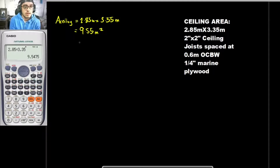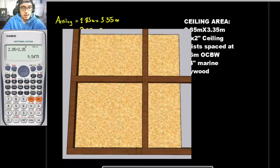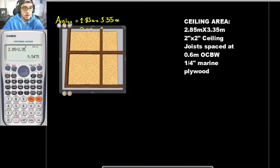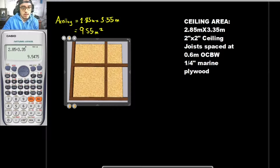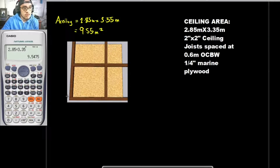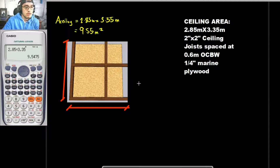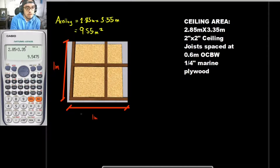Now that we have the ceiling area, the next thing we need to do is get the factor for the ceiling joists. Using a 1-meter by 1-meter reference grid, we place the dimensions — this is 1 meter and this is also 1 meter — to get the length of lumber per square meter. The spacing of the ceiling joists here is 0.6 meters.